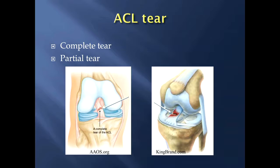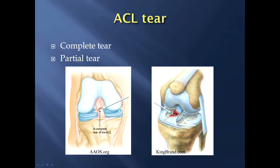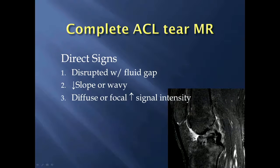The most common injury to occur to the ACL is a tear, and those are broken into two main categories: the complete tear — the more devastating one that requires surgery — and a partial tear. Here's a complete tear of the ACL, and here's another image showing a partial ACL tear.